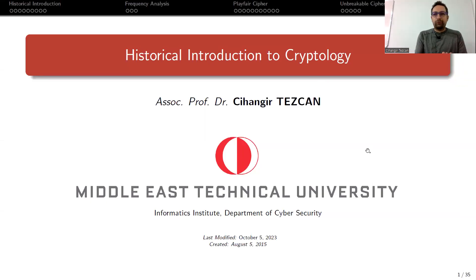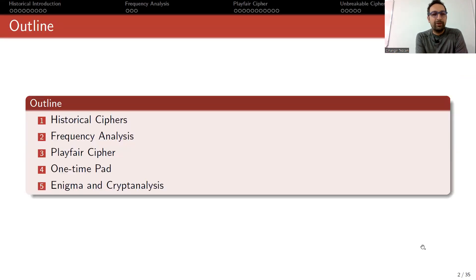Today's topic is historical introduction to cryptology. Our aim is to see why we have ciphers like block ciphers. We want to understand what happened in the past so we can understand modern algorithms. Here's a brief outline: we will talk about some terms, then historical ciphers.